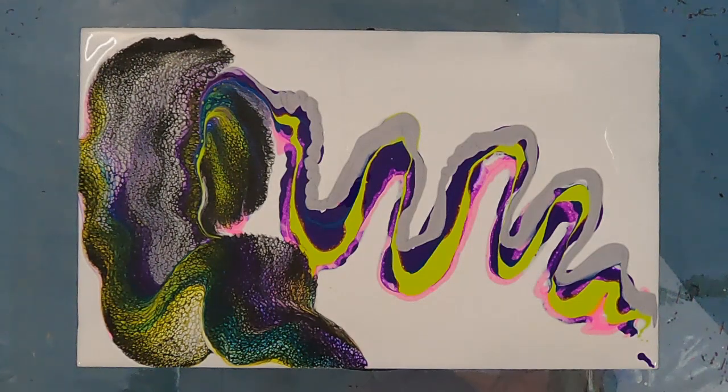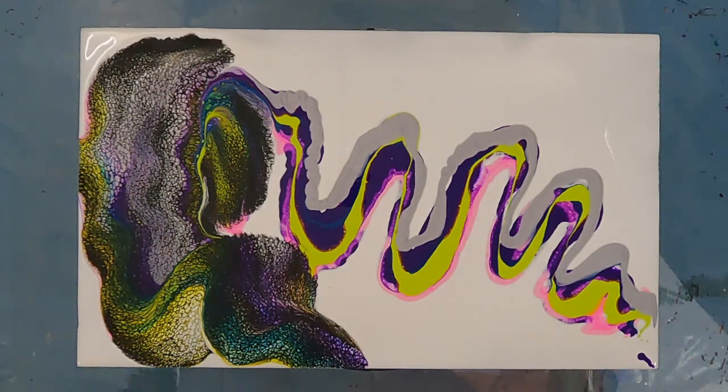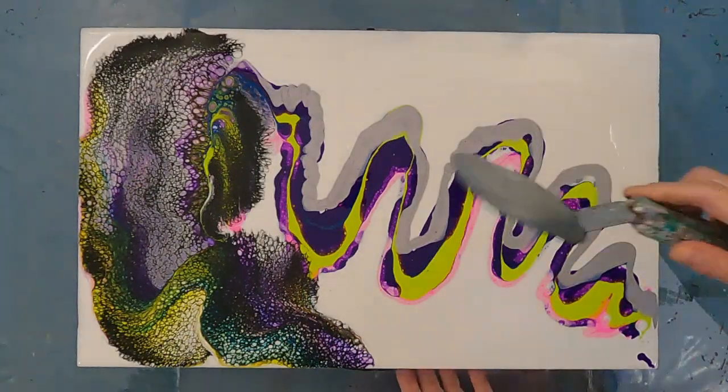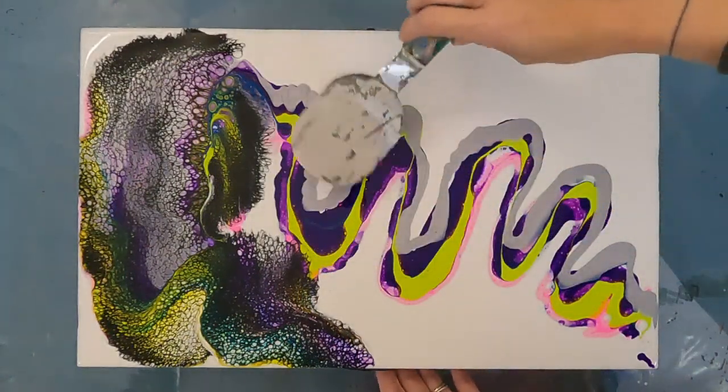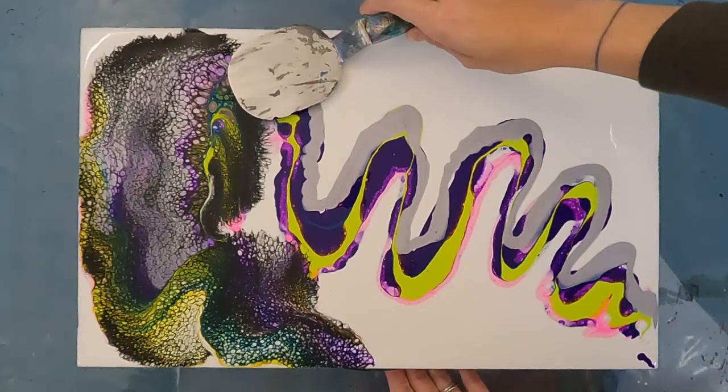I'm using black 2.0 mixed with Floetrol as the cell activator color. I'll leave a list of the other colors down in the description if you want to see what else I'm using today.